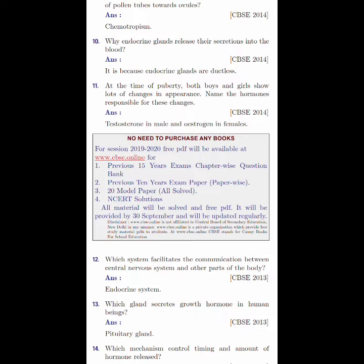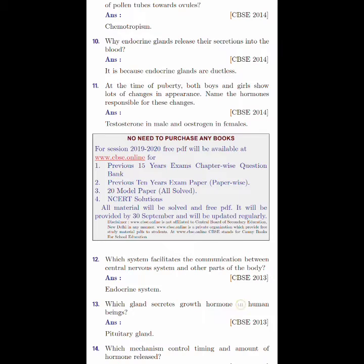Why do endocrine glands release their secretion into the blood? It is because endocrine glands are ductless. At the time of puberty, both boys and girls show lots of changes in appearance. Name the hormones responsible for these changes. That is testosterone in case of males and estrogen in case of females. These are the hormones present in male as well as female respectively.